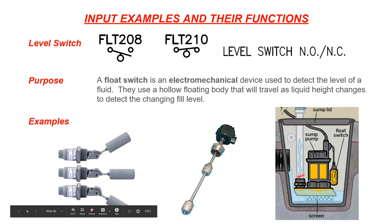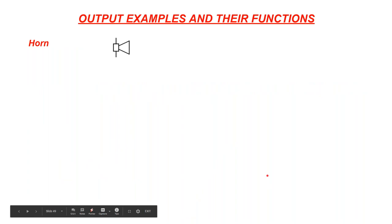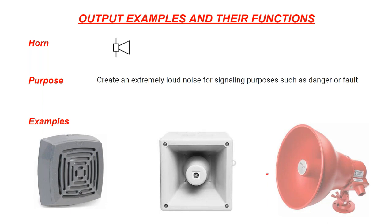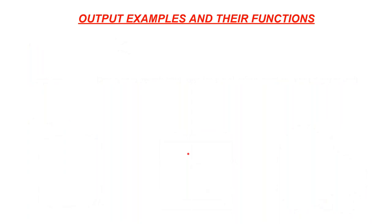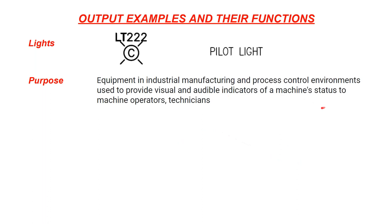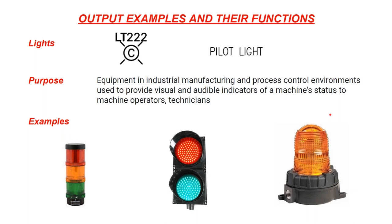On the output side: a horn makes a loud noise to indicate danger, a fault, or an alarm. Lights turn on or off to indicate something about the process — for example, whether a motor is running and what state it's in. You'll also see stack lights and other types of signaling beacons.